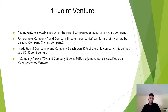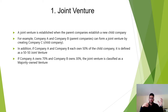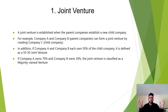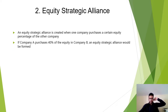A joint venture is when two established companies come together to form a secondary company. For example, Coca-Cola and Lays come together to create a new company that sells a drink-and-chip combo. If both own 50% it's a 50/50 joint venture; if Coca-Cola owns more than Lays, it's a majority-owned venture.